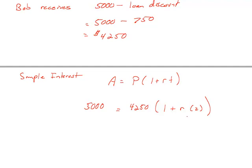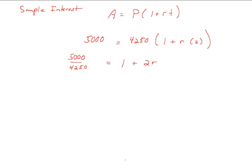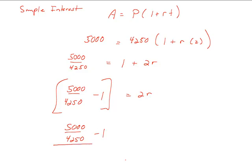So solving for R, I'm going to divide both sides by $4,250. So we have $5,000 divided by $4,250 equals 1 plus 2R. Then I need to subtract 1 from both sides, so we're going to take $5,000 divided by $4,250, subtract 1. That's my left-hand side equals 2R. And then I need to divide through both sides of the equation by 2. So $5,000 over our $4,250 minus 1, that whole expression is divided by 2, and that's the rate of interest that we're going to end up with.